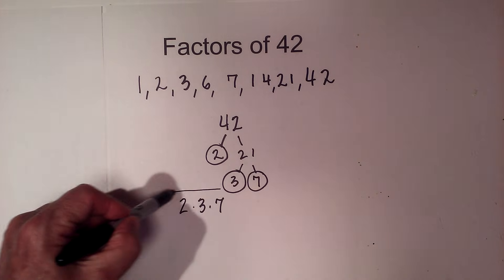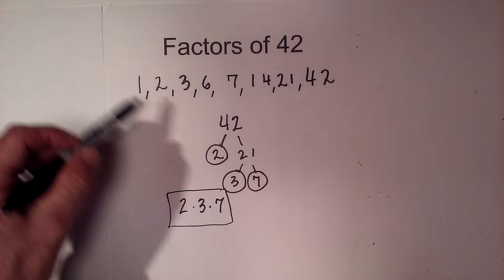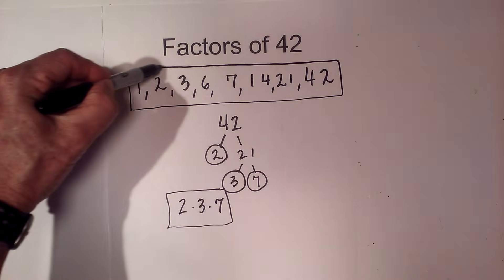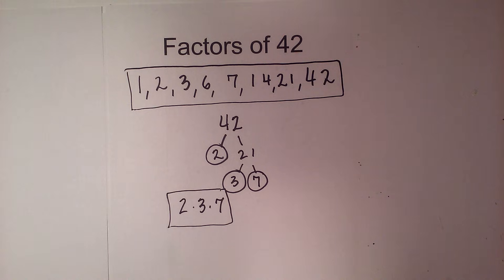Here are your prime factors, and here are all of the factors that multiply together to equal 42. Thanks for watching. Moomoo Math uploads a new math or science video every day. Please subscribe or share.